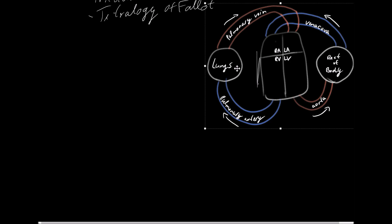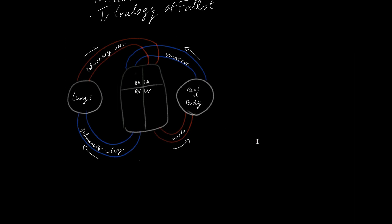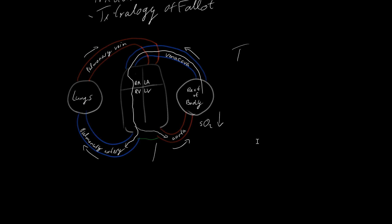In truncus arteriosus, the aorta and pulmonary artery, which are normally two separate vessels, become one. The right and left ventricles also become one compartment. As a result, oxygen-poor blood arriving from the body via the vena cava passes through the right atrium and ventricle and, instead of going only to the pulmonary artery, part of it goes to the aorta — so O2 saturation drops.